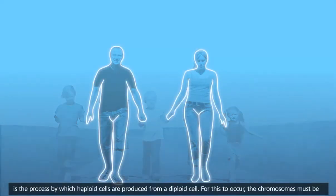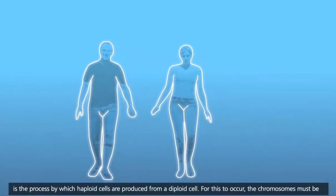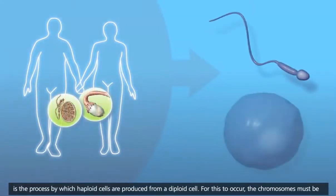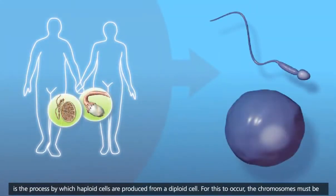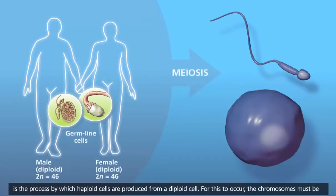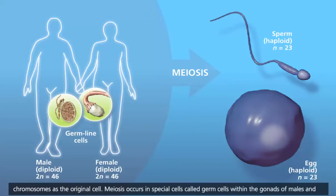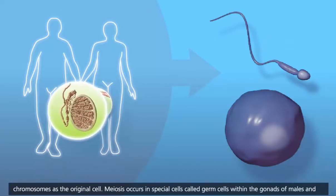Meiosis is the process by which haploid cells are produced from a diploid cell. For this to occur, the chromosomes must be correctly sorted and distributed in a manner to create genetically unique cells with half the number of chromosomes as the original cell.